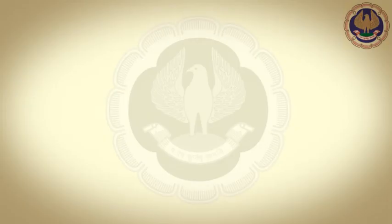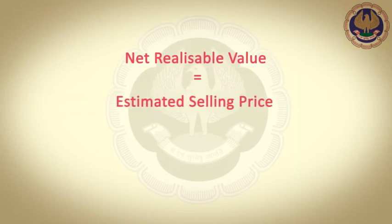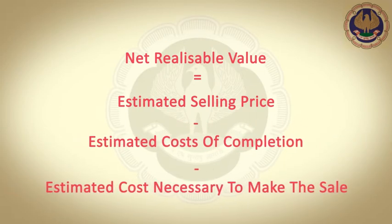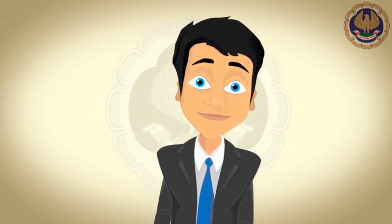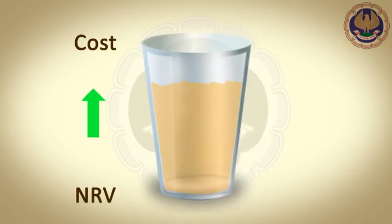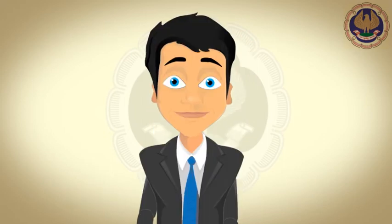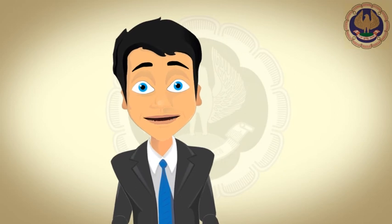As discussed earlier, net realizable value is the estimated selling price in the ordinary course of business, less the estimated cost of completion and the estimated cost necessary to make the sale. The practice of writing inventories down below cost to net realizable value is consistent with the view that assets should not be carried in excess of the amount expected to be realized from their sale or use. Estimates of net realizable value are based on the most reliable evidence available at the time the estimates are made.